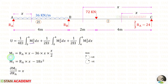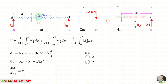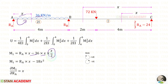Now let us find M1. RA acts clockwise so it is positive, contributing RA·x. The UDL acts anticlockwise, so it is negative; for UDL we multiply the length by the length divided by 2. Partially differentiating M1 with respect to RA: for RA the result is 1, and for the UDL term there is no RA so it is 0. Therefore ∂M1/∂RA = x.